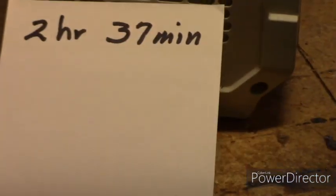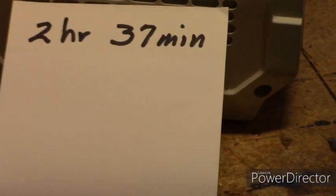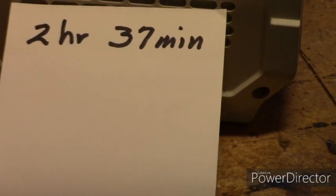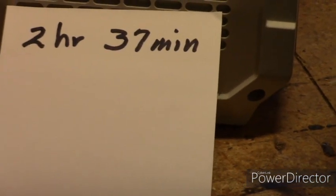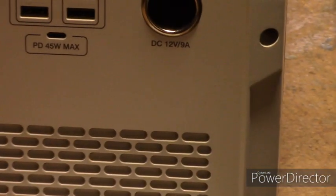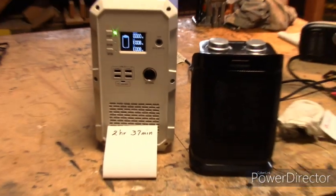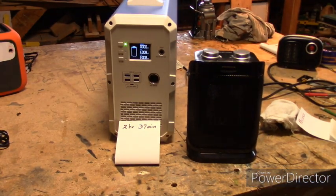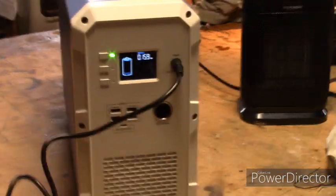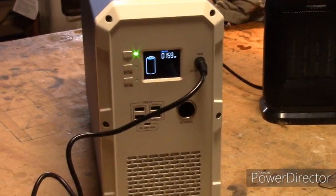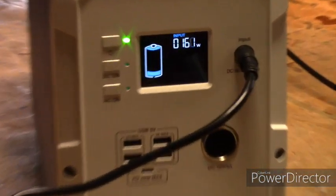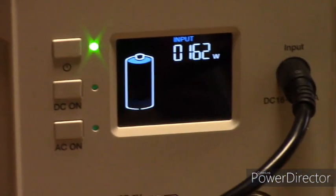After 2 hours and 37 minutes the heater stops and the power station shows error code E08 — under voltage protection for the first cell. Time to recharge.